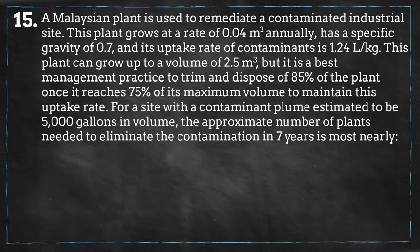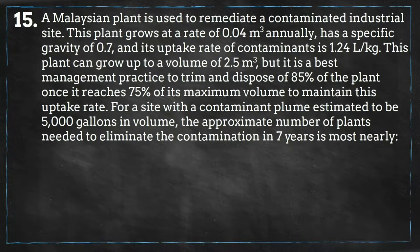A Malaysian plant is used to remediate a contaminated industrial site. This plant grows at a rate of 0.04 cubic meters annually, has a specific gravity of 0.7, and its uptake rate of contaminants is 1.24 liters per kilogram. This plant can grow up to a volume of 2.5 cubic meters, but it is a best management practice to trim and dispose of 85 percent of the plant once it reaches 75 percent of its maximum volume to maintain this uptake rate.